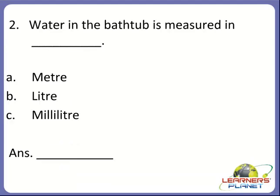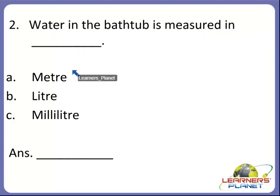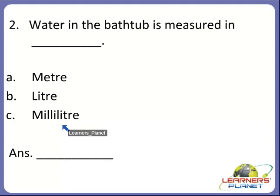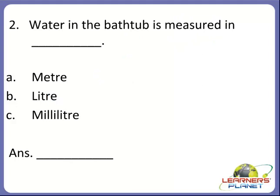Now the next one. Water in the bathtub is measured in dash. We did the same example in the lesson. Is it meter, liter, or milliliter? Yes — water in the bathtub is measured in liter. So B is the correct answer.